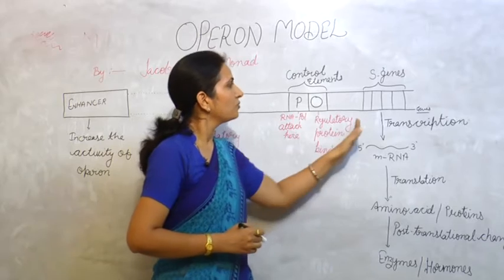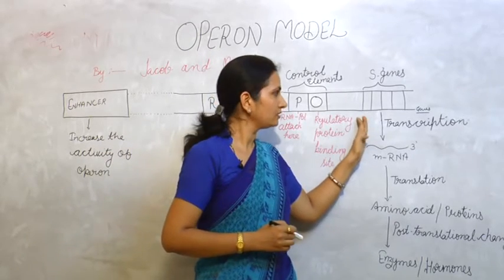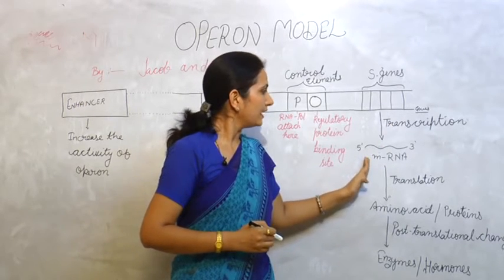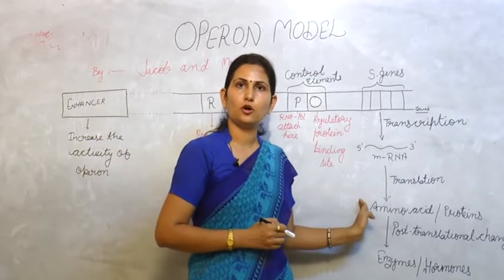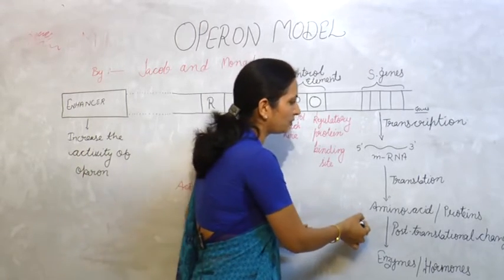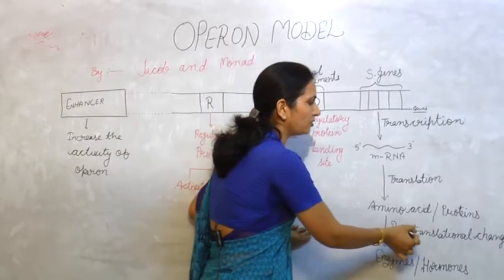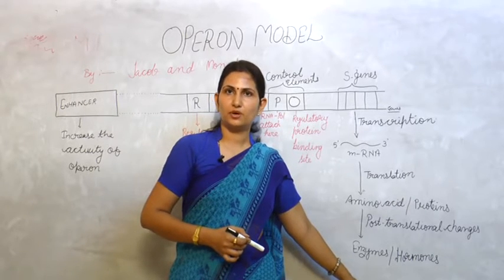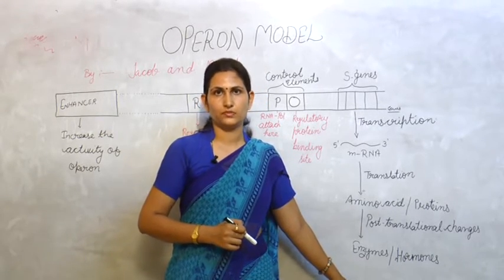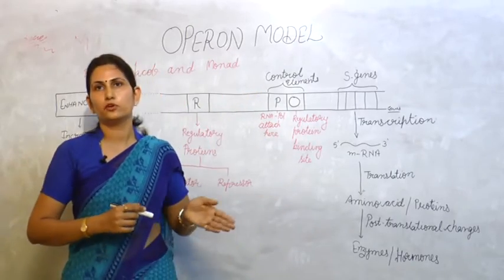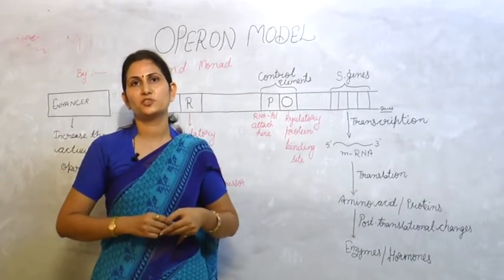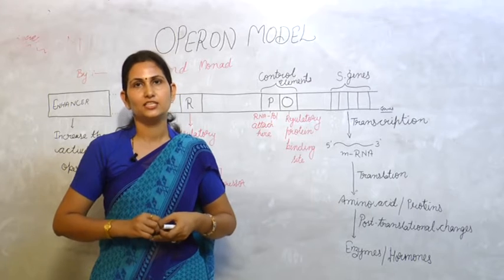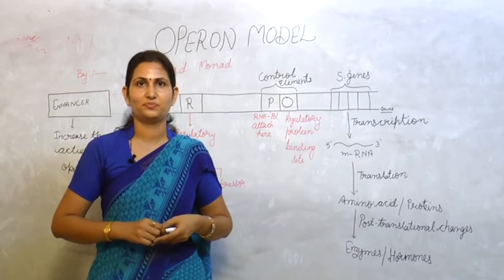According to central dogma, we have several genes in our DNA. They transcribe and make mRNA. The mRNA translates and makes amino acids or proteins. These amino acids and proteins undergo post-translational changes and form enzymes and hormones. Our entire metabolism is based on enzymes and hormones. That's all about the central dogma and the operon model. Hope my lecture benefited you. For more details kindly log on to our website www.gurukpo.com. Thank you.